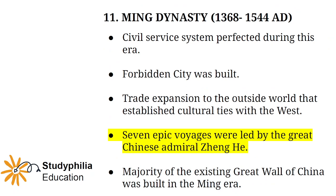In the Ming dynasty, the civil service system was perfected. The Forbidden City was built and trade expanded to the outside world, establishing cultural ties with the West. Seven epic voyages were led by the great Chinese admiral Zheng He. Also, the majority of the existing Great Wall of China that we see today was built during the Ming era.